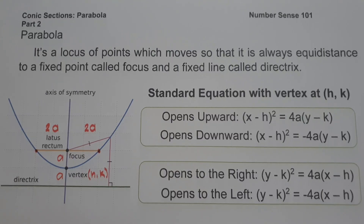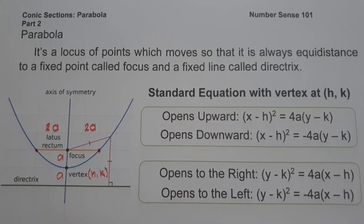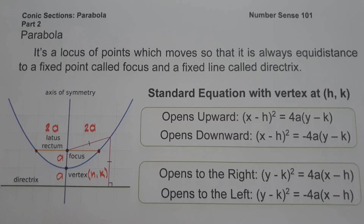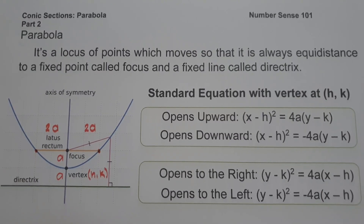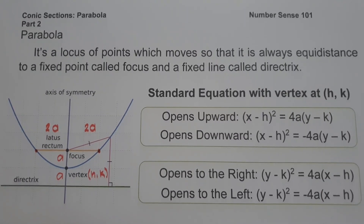So let's define first what is a parabola. When you say parabola, it is a locus of all points which moves so that it is always equidistant to a fixed point called the focus and a fixed line called the directrix.